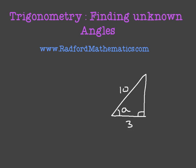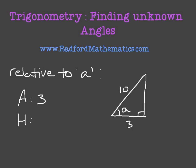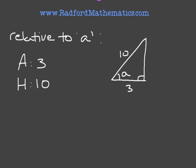Relative to the angle A, we have this side here — 3 — which is adjacent to A. So we can write: A (adjacent) = 3. And we're also given the hypotenuse of the triangle, which is 10. So we can write H (hypotenuse) = 10. And we're going to make use of SOHCAHTOA.